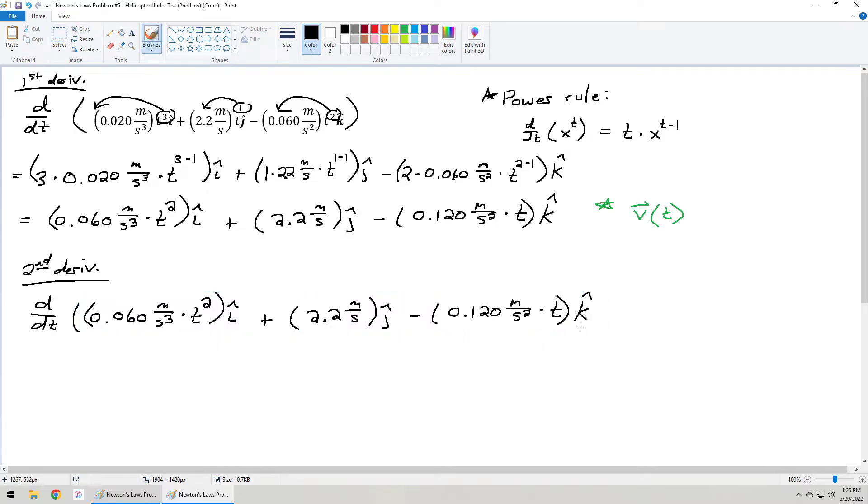And we're doing d over dt of everything that we just wrote for that velocity vector. We're doing the same process again. We're essentially doing it two times in a row. And it's the same rule, same approach, same everything. I'm going to, again, like I said before, save a step, I'm not going to do everything in two steps, I'm going to do it all in one.